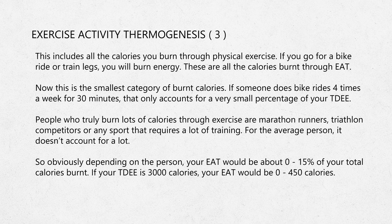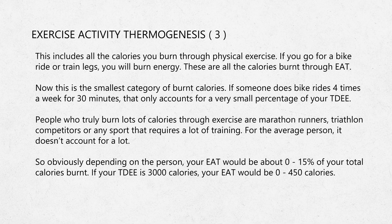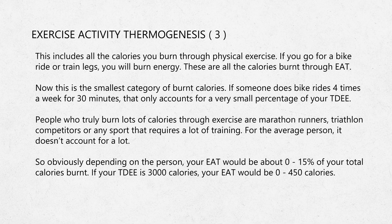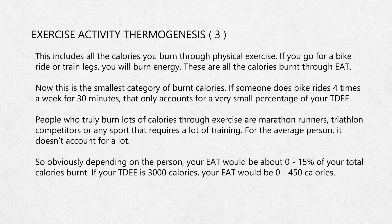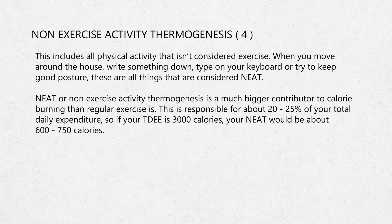The third component is your EAT, or exercise activity thermogenesis. This includes all of the calories you burn through physical exercise — if you go for a bike ride or train legs, you will burn energy. Now this is, probably against all expectations, the smallest component of all. If someone goes for a bike ride four times a week for 30 minutes, that only accounts for a very small percentage of their total calories burned. The only people who truly burn a lot of calories through exercise are marathon runners, triathlon competitors, or athletes in sports requiring a lot of training. For the average person, it doesn't account for a lot — your EAT would be about 0–15% of your total calories burned, or about 0–450 calories on a 3,000-calorie metabolism.